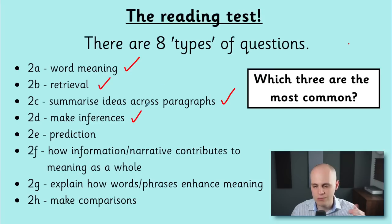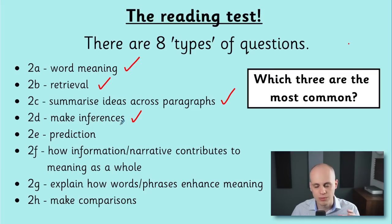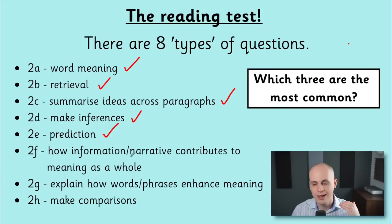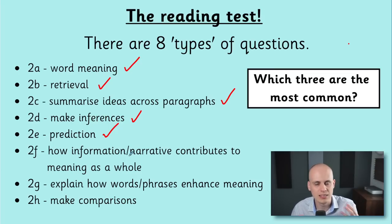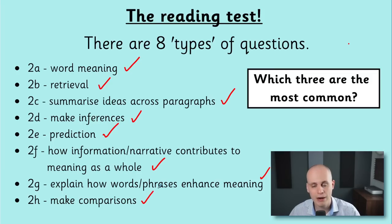Making inferences — everybody's favorite. This is what we spend most of the time doing at school. It's about reading between the lines, understanding what's going on behind the scenes just from the text. Then prediction. And then 2F and 2G, which are both about how words, phrases, or even paragraphs contribute to the meaning as a whole — like maybe it adds something to the whole story or fact file. And the last one is making comparisons between two areas of the text or two characters.